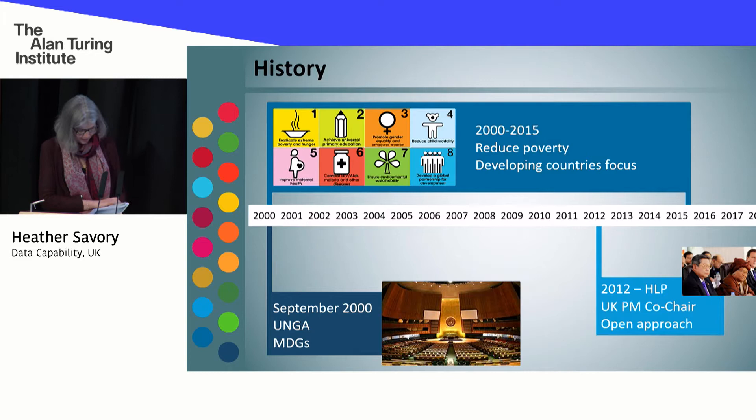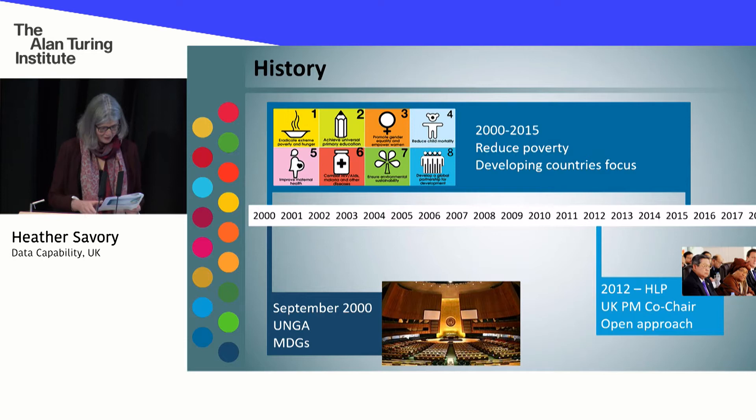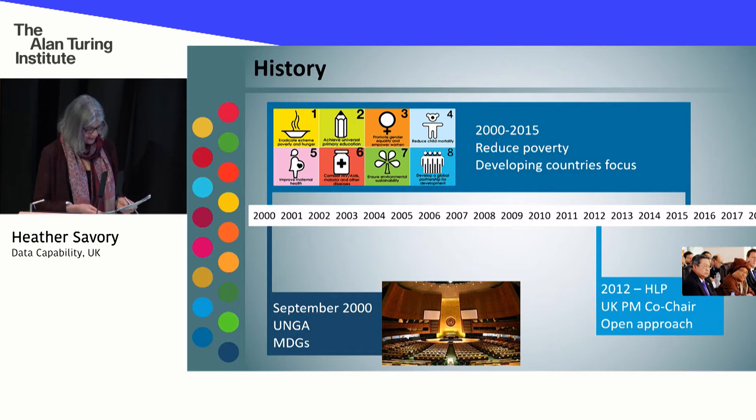There were eight of these goals: eradicating extreme poverty and hunger, achieving universal primary education, promoting gender equality and empowering women — very important for most of us in the room here today — reducing child mortality, improving maternal health, combating HIV, AIDS, malaria and other similar diseases, ensuring environmental sustainability, and developing a global partnership for development.